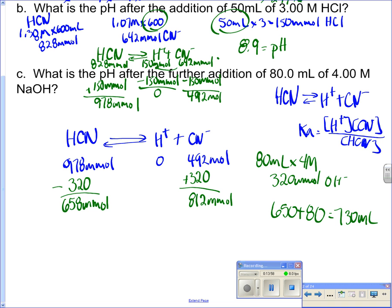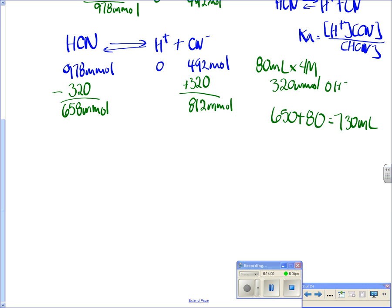So now I'm going to plug and chug back in my same deal again. So my Ka 6.2 times 10 to the minus 10 equals X, 812 over 730 divided by 658 over 730. Oh, again, I'm not going to worry about calculating that 730 in there because they just cancel out. So times by 658, I'm going to divide by 812.